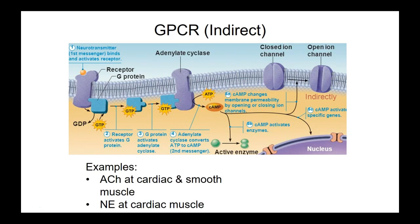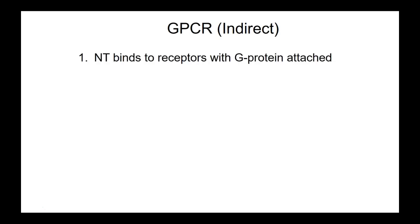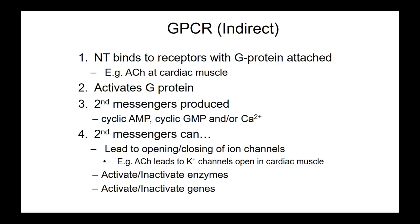Acetylcholine at cardiac and smooth muscle uses this indirect G protein-coupled receptor mechanism. Norepinephrine also uses a similar mechanism. Key things to remember: a G protein is activated when GTP is loaded; it gets activated when a ligand binds the receptor and causes GDP-to-GTP exchange. Second messengers like cyclic AMP are important for signal amplification and for activating other things, including opening of ion channels. About one in three drugs targets G protein-coupled receptors.